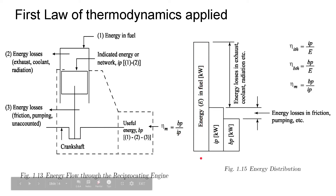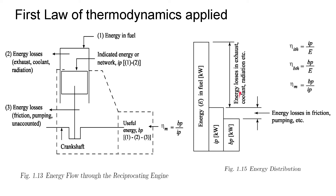The total energy in fuel is given, and a part of it is used — that is the indicated energy available. BP means brake power; indicated power and brake power are defined here. After the major losses (exhaust, coolant, radiation), only indicated energy is available — that is the first level of loss. After the second level of minor losses due to friction, only brake power BP remains.